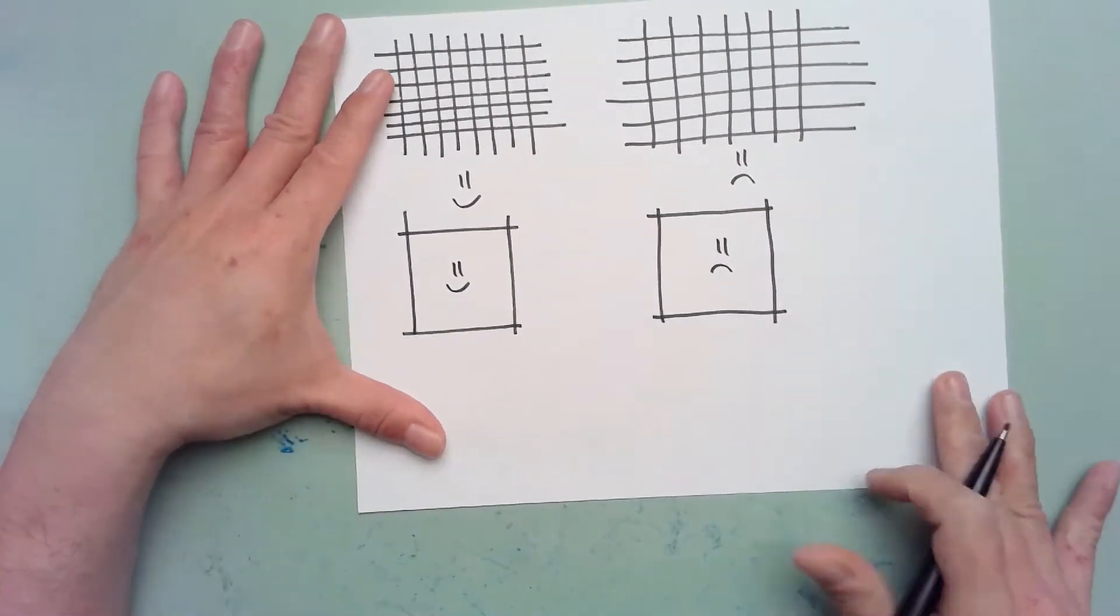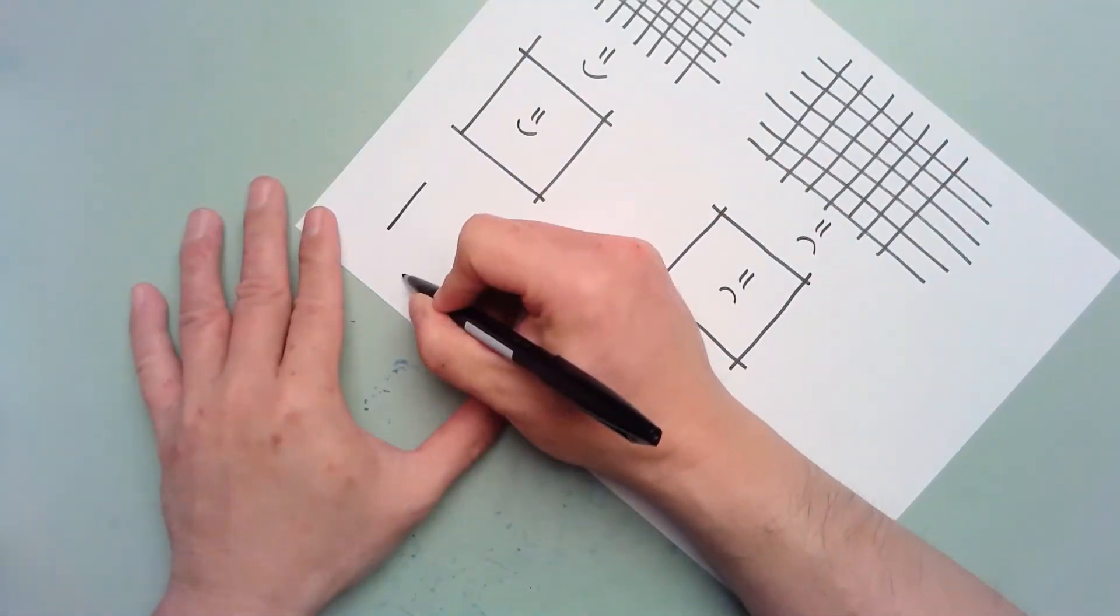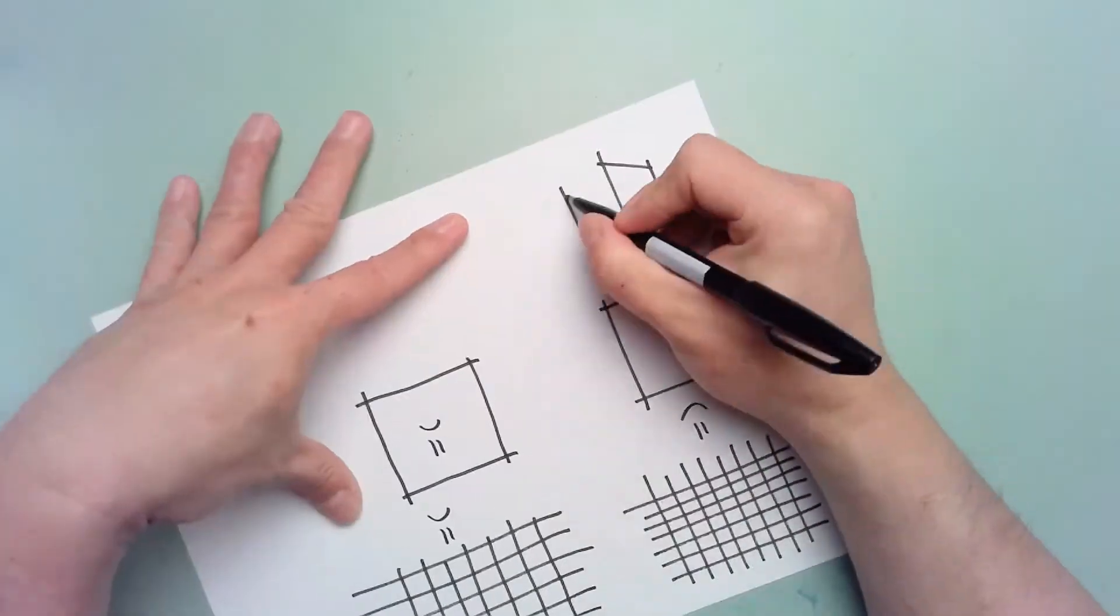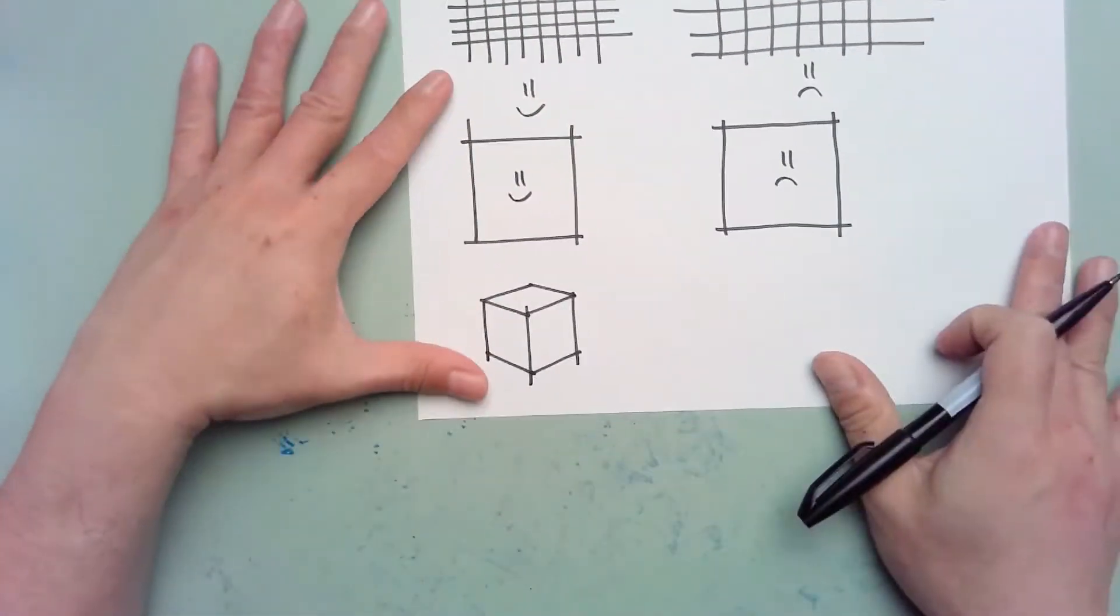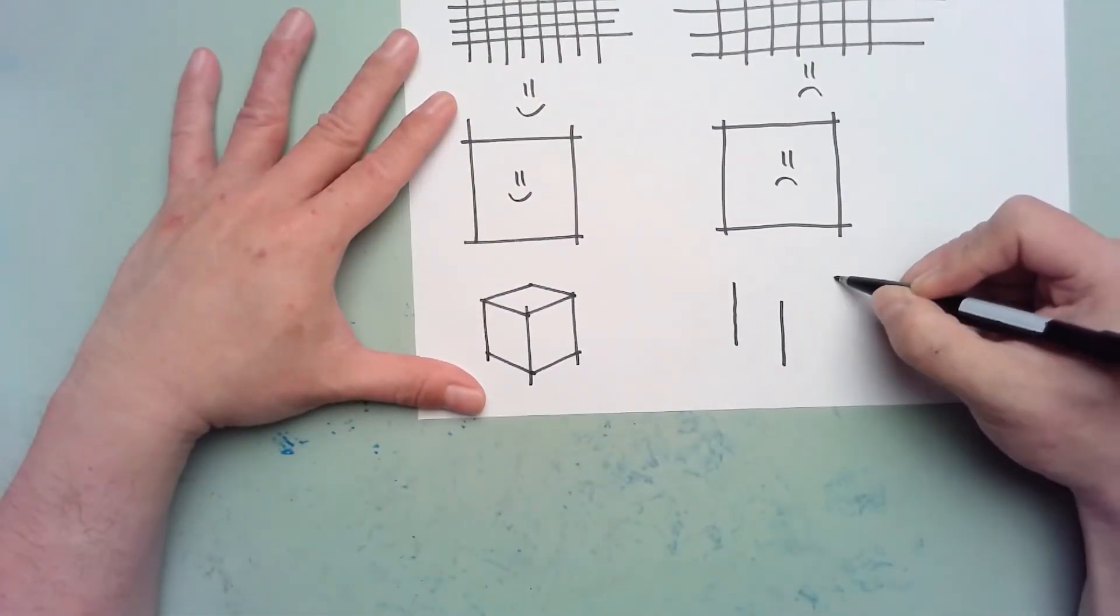In this slightly sped up sequence, I am demonstrating the ideal integration of proper pen grip, locked wrist, paper spin, and power stroke as I sketch in the left column.